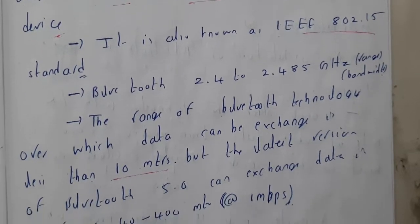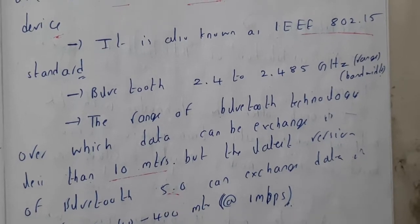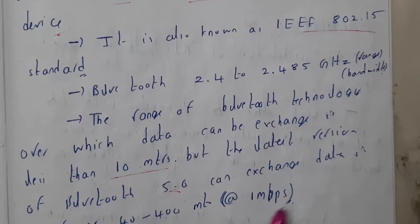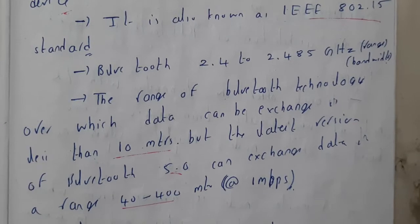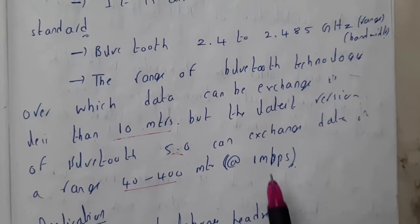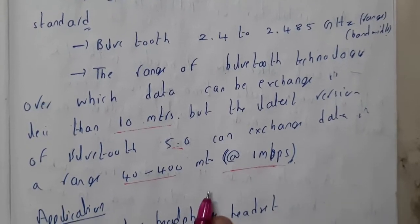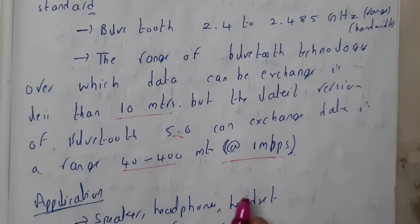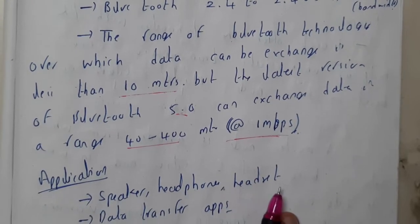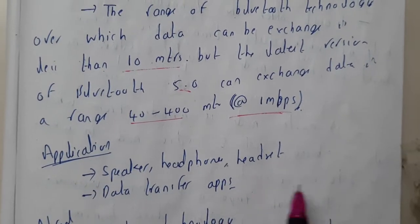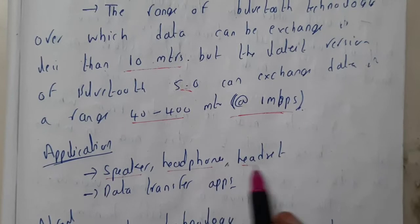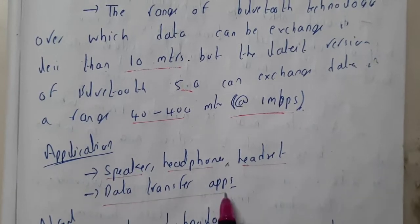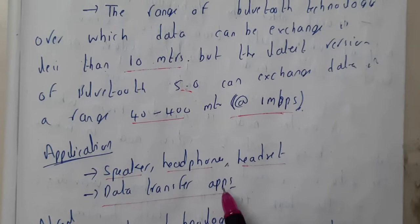But the latest version, Bluetooth 5.0, can have a range of 40 to 400 meters, and we can transfer data at a speed of 1 Mbps. The applications of Bluetooth include speakers, headphones, handsets, and data-transferring apps like SHAREit, among many others.